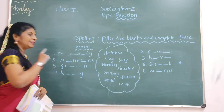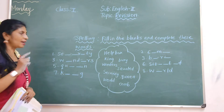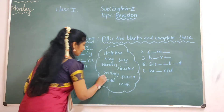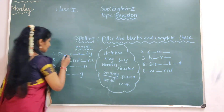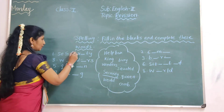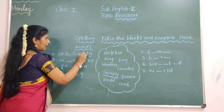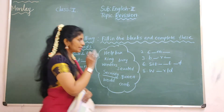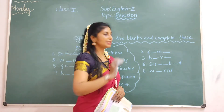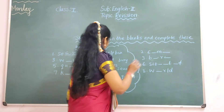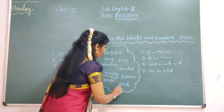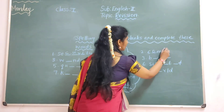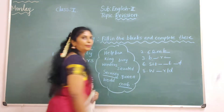First one. S-E-C-U-R-I-T-Y: security. Second one. C-O-M-B: comb.